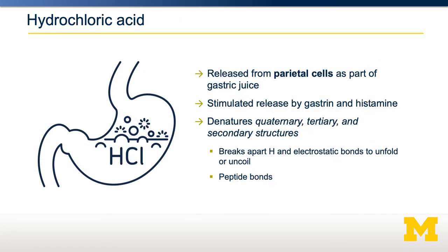That stomach acid has two important roles. First, the stomach acids help denature the protein. Recall that proteins have unique and diverse secondary, tertiary, and quaternary structures. Breaking those down and making the peptide bonds available to the enzymes is a very important part of protein digestion, and this starts in the stomach with the release of stomach acids. Stomach acids also activate the next enzyme we're going to talk about: pepsinogen.